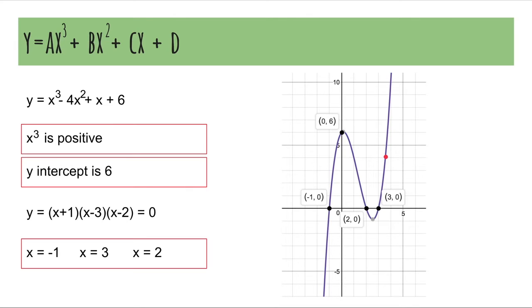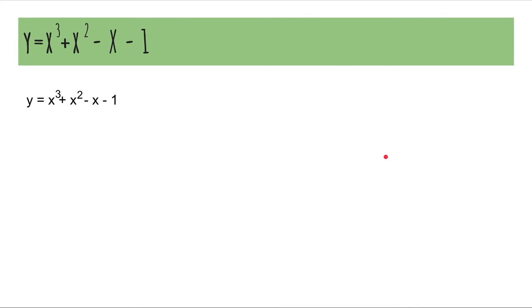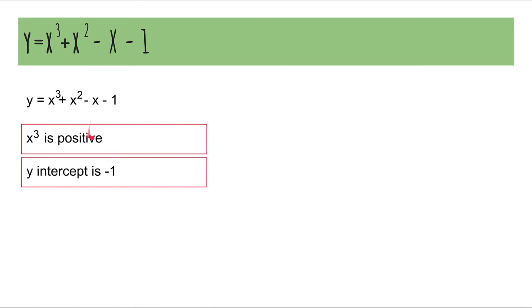But there are some exceptions. This is an example of an exception. We know the x cubed term is positive, so it's going to start from the bottom. The y-intercept is negative 1.